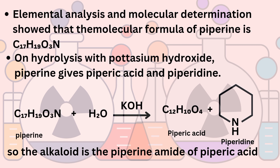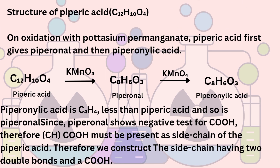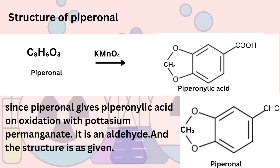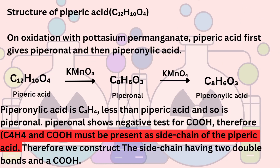To recap: on hydrolysis with potassium hydroxide, piperine gives piperic acid and piperidine. To find the structure of piperic acid, we considered oxidation with potassium permanganate, which gave piperonil and then piperonilic acid — the structure of which we just confirmed. Now we need the structure of piperonil. Since piperonil gives piperonilic acid on oxidation with potassium permanganate, piperonil is likely an aldehyde — specifically 3,4-methylene-dioxy-benzaldehyde. We can now confirm the structures of both piperonilic acid and piperonil. The side chain of piperic acid contains the carboxylic group and C4H4.